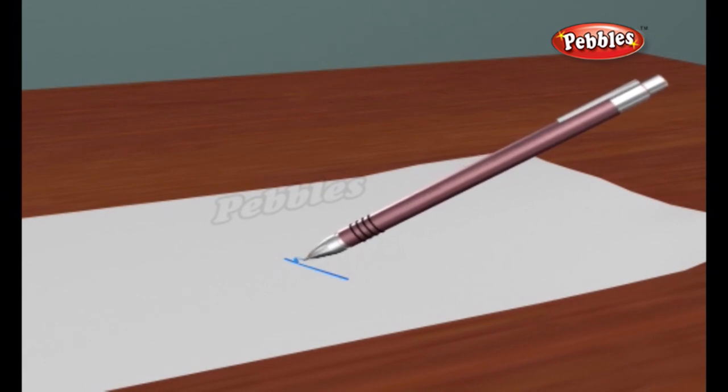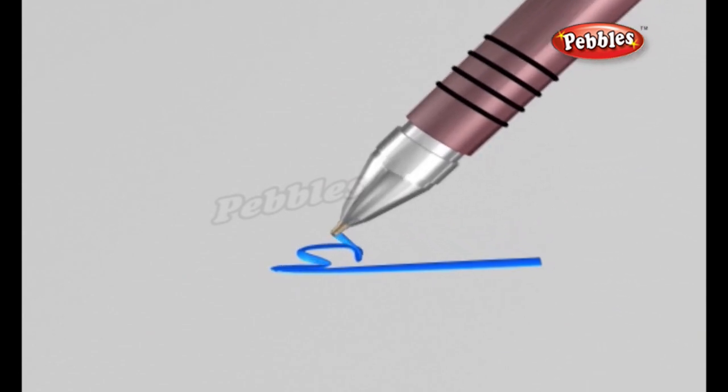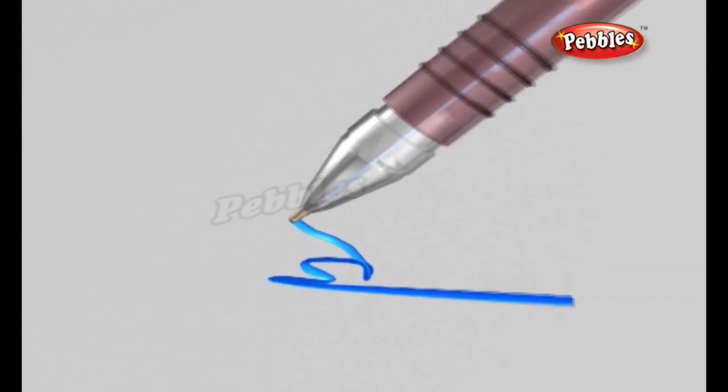As the pen moves across the paper, the ball turns and gravity forces the ink down the reservoir and onto the ball, where it is transferred onto the paper.